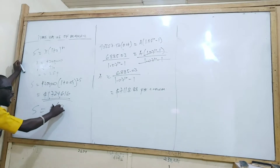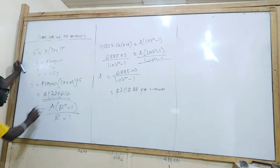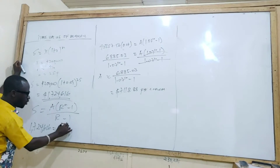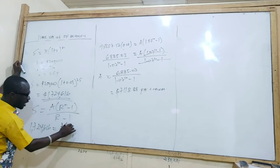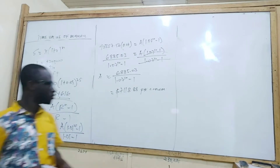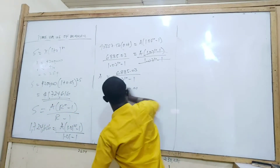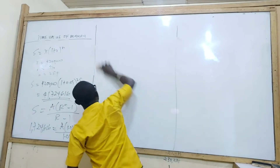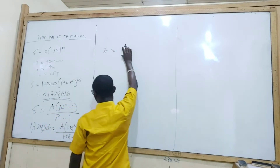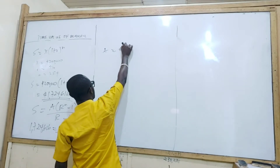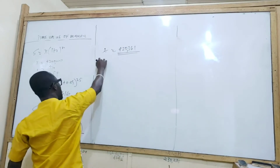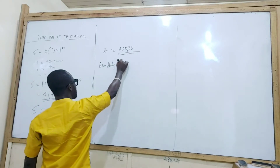We substitute: $1,724,616 equals A times (1.09 exponent 25 minus 1) over (1.09 minus 1). That makes sense because the rate is 1 plus 0.09. When you do the workings, you find A equals approximately $23,600 per annum. But we are asked for monthly repayment, so to get the monthly payment, we divide $23,600 by 12.